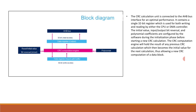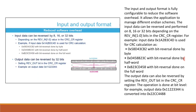The input and output format is fully configurable to reduce software overhead, allowing the application to manage different endian schemes. Input data can be reversed and performed on 8, 16, or 32 bits. For example, input data 0x1A2B3C4D is used for CRC calculation as 0x58D43C3CB2 with bit reversal done by byte, or 0xD458B23C with bit reversal done by half-word.